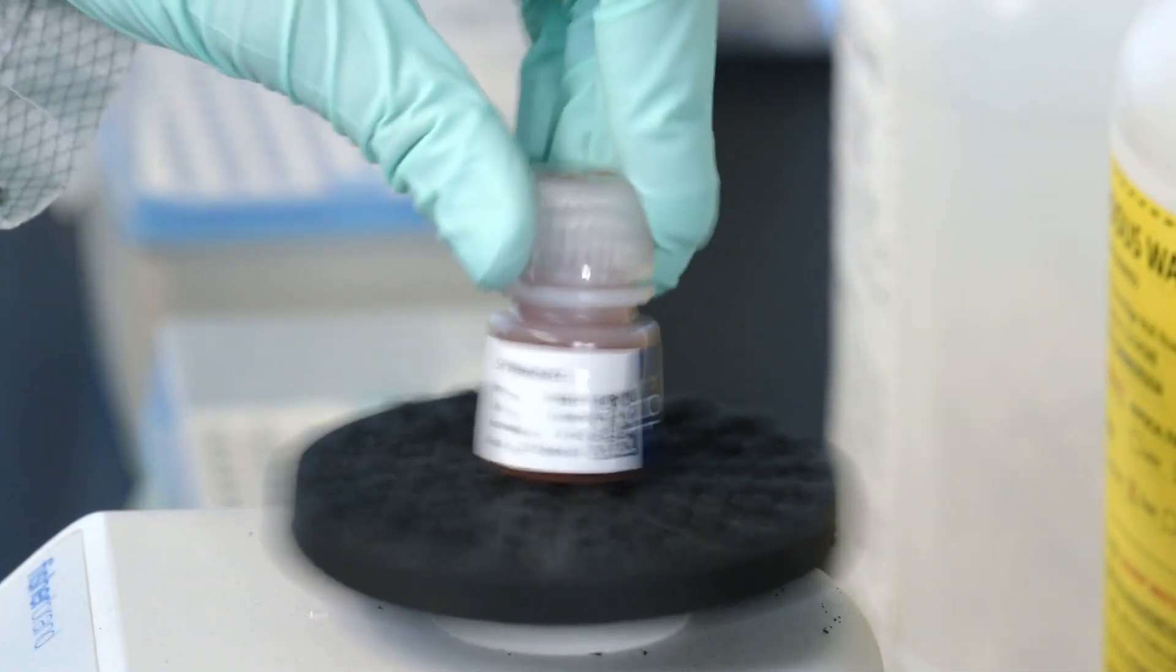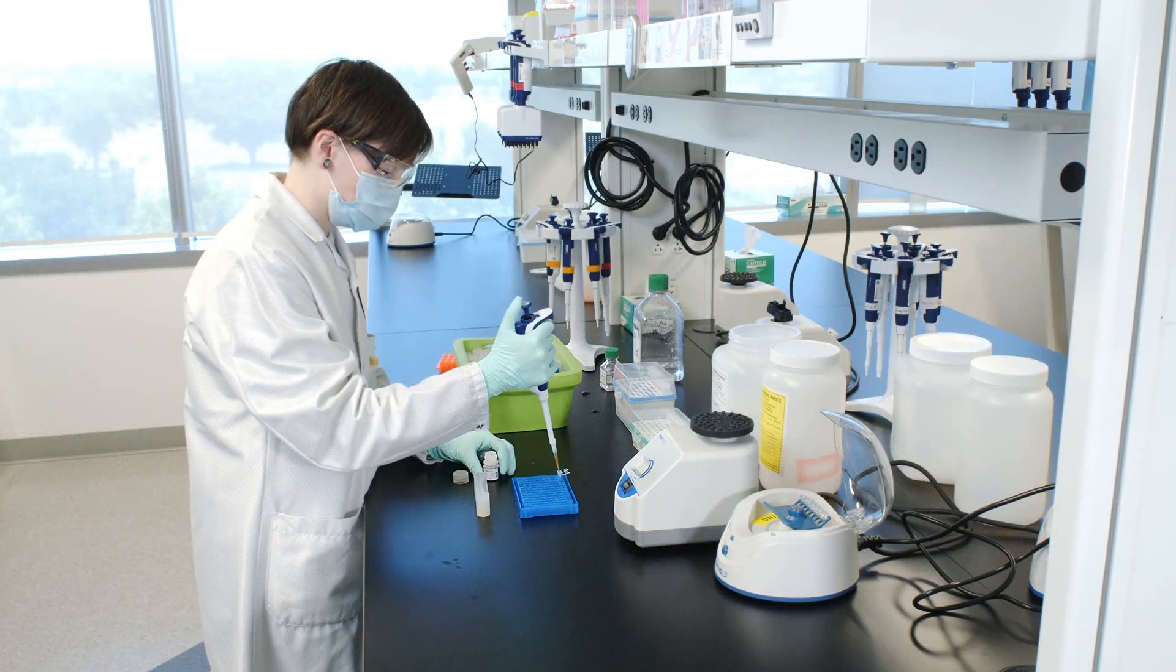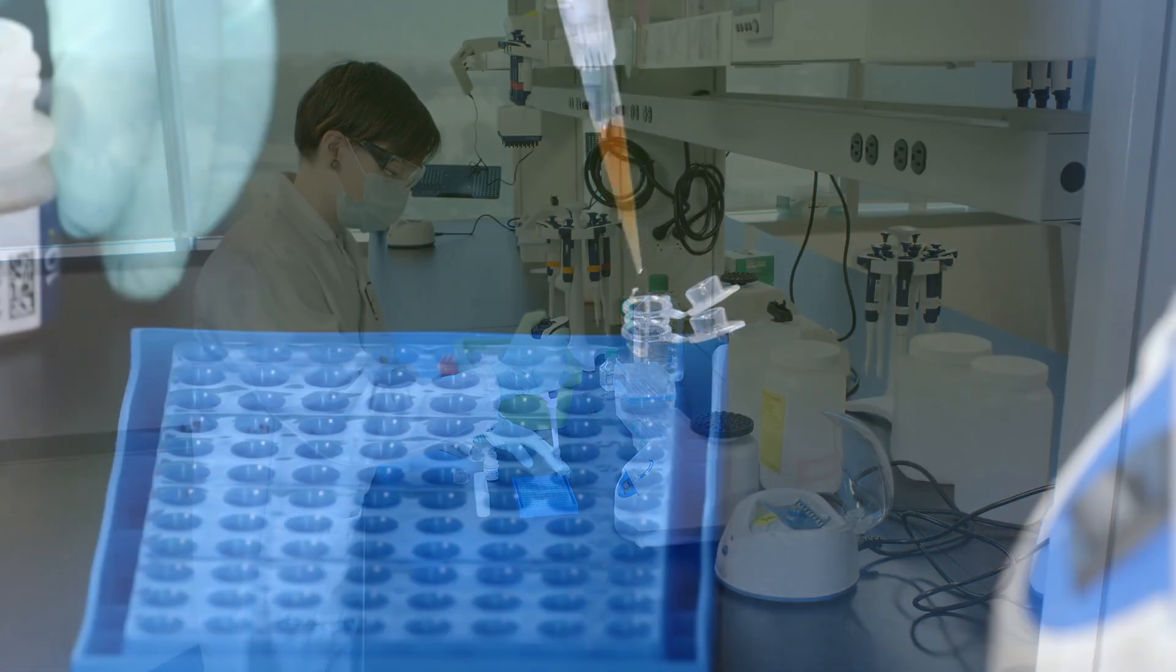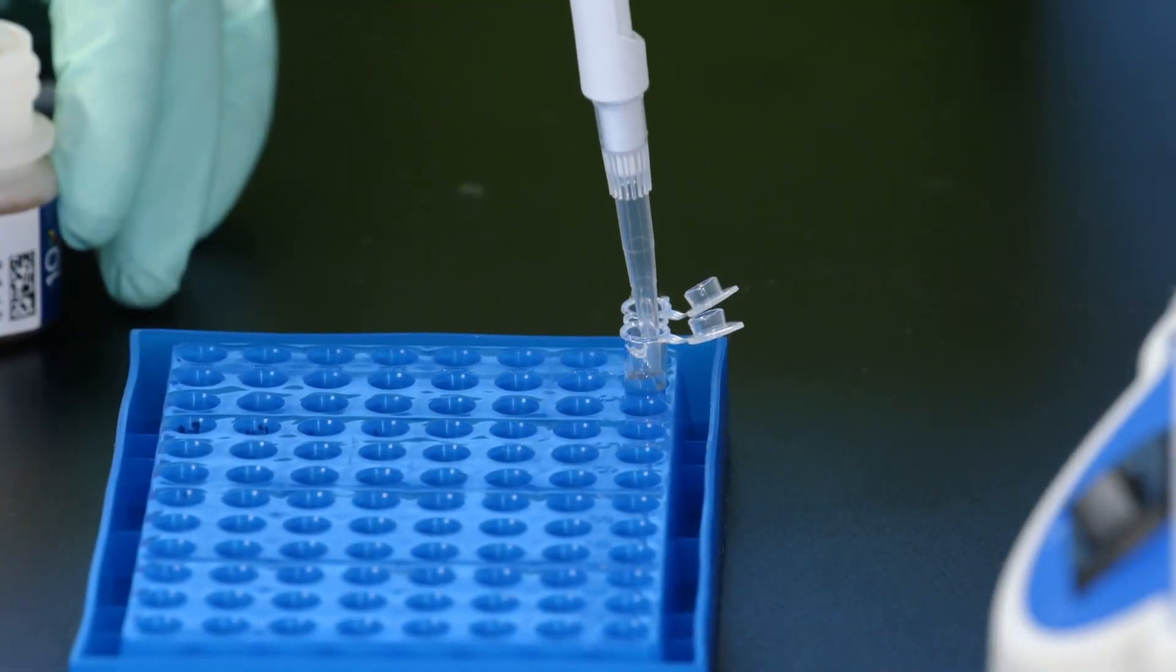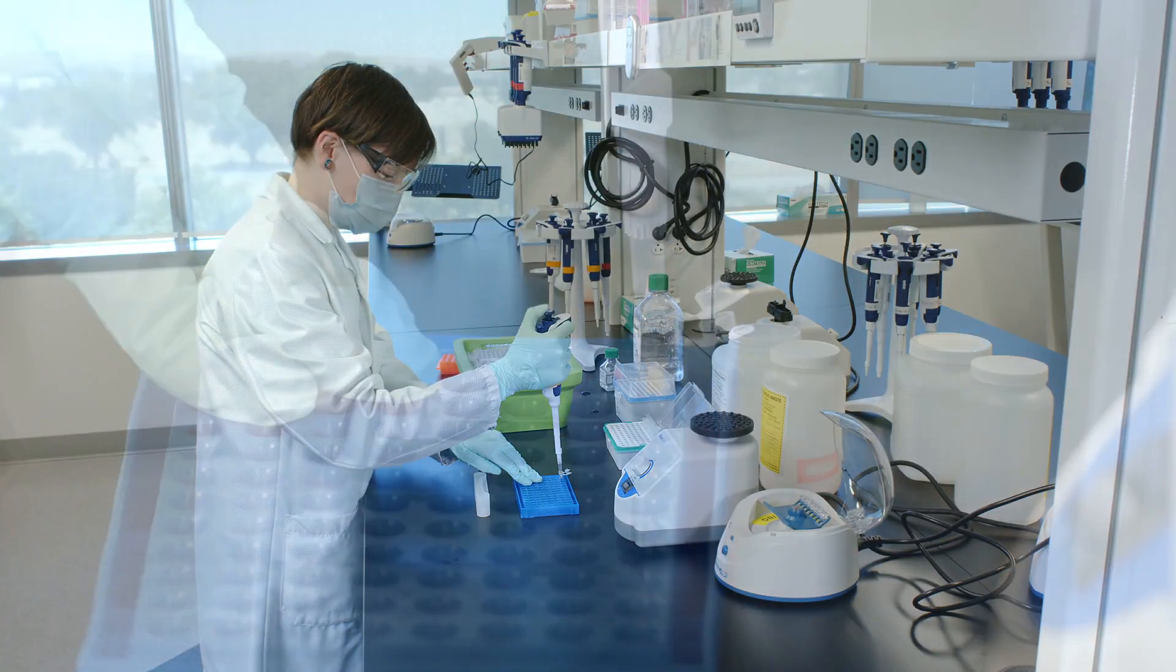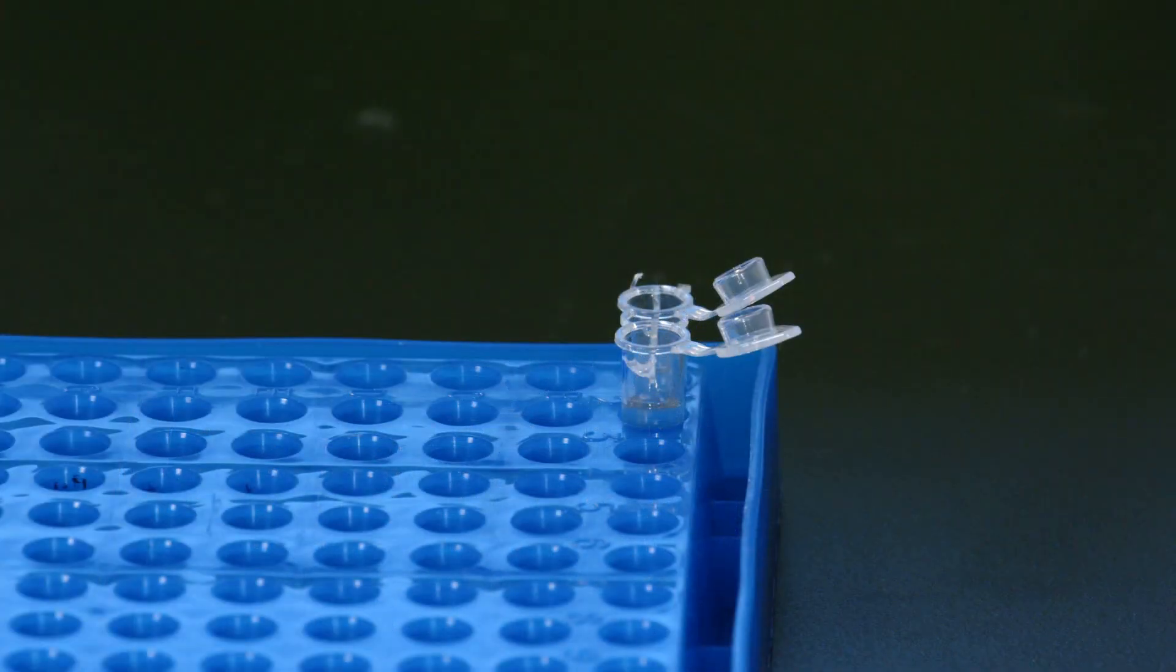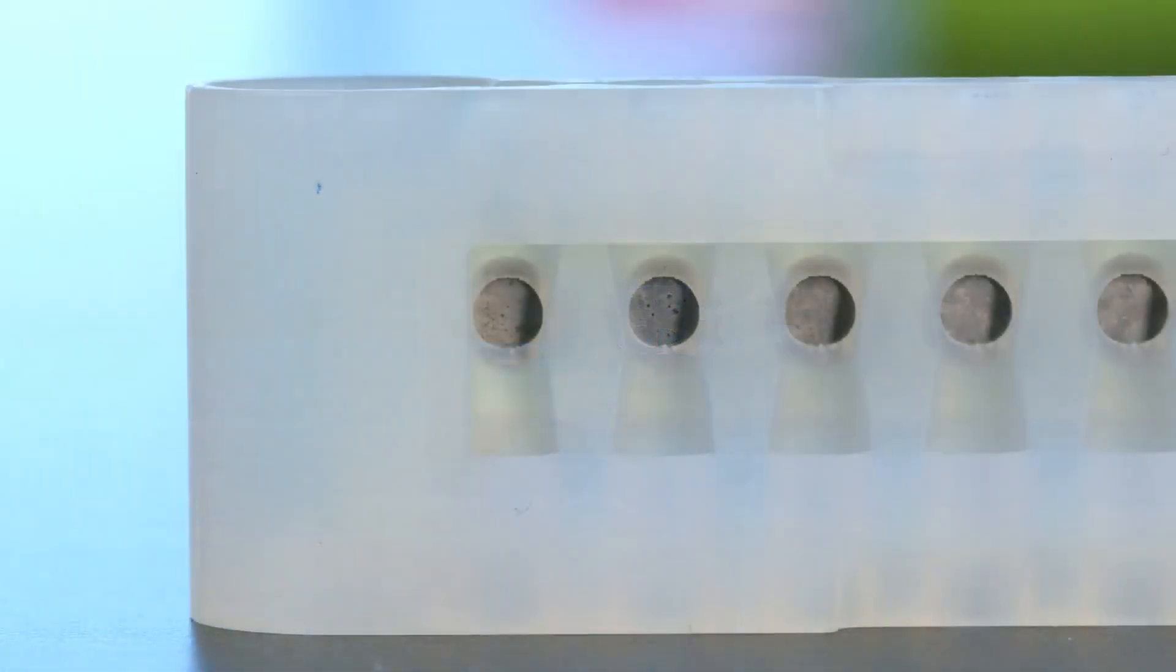Vortex to resuspend the SPRI select reagent. Add 85 microliters of SPRI select reagent to each sample. Pipette mix 15 times with the pipette set to 175 microliters. Incubate at room temperature for 5 minutes. Place on the magnet in the high position until the solution clears.